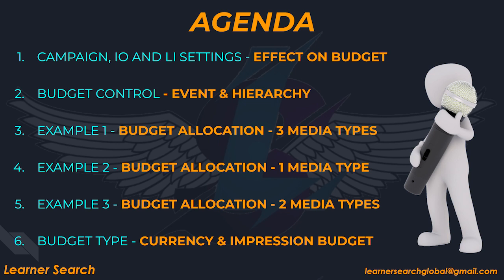In example 1, budget allocation between 3 media types. In example 2, budget allocation for 1 media type with multiple creatives. And example 3, budget allocation with 2 media types. Finally, I will explain budget type in DV360 — currency and impression budget type.